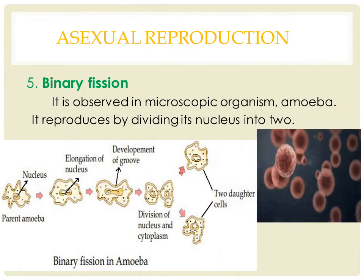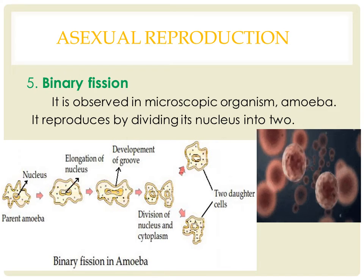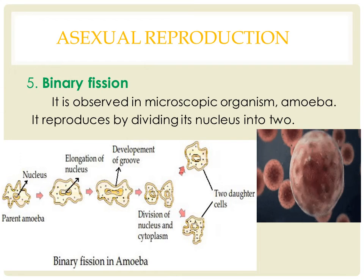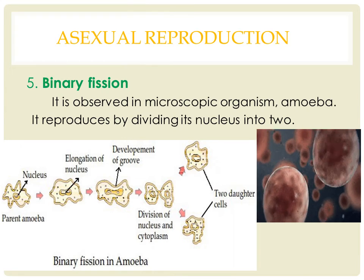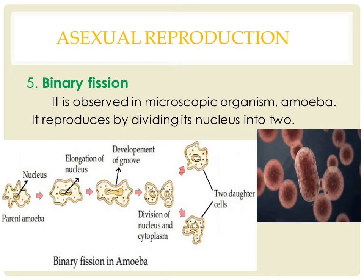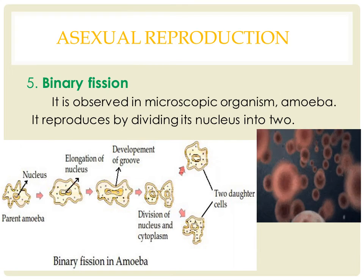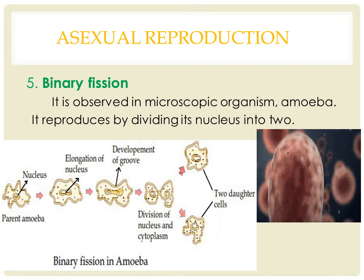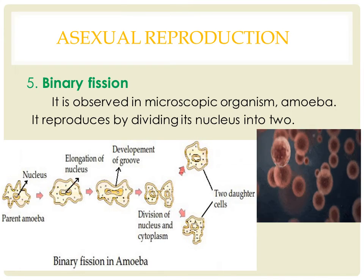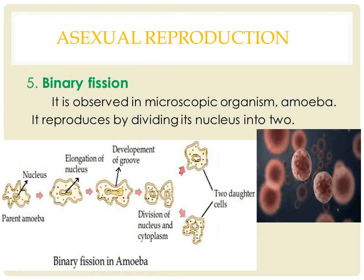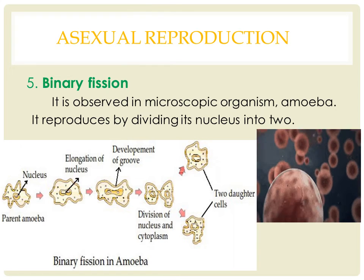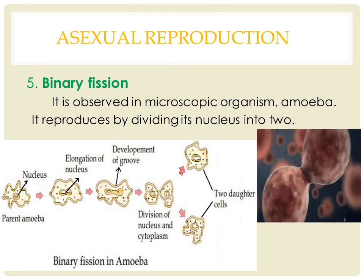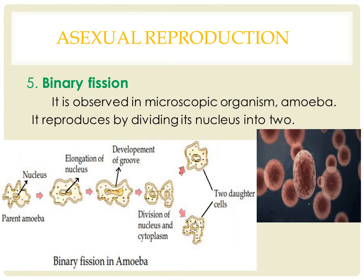Another method of asexual reproduction is through binary fission. It is observed in the microscopic organism amoeba. Amoeba is a single-celled organism that reproduces by dividing its nucleus into two. Then it will also get divided into two, each part receiving a separate nucleus. And thus, two amoeba are produced from one parent organism.